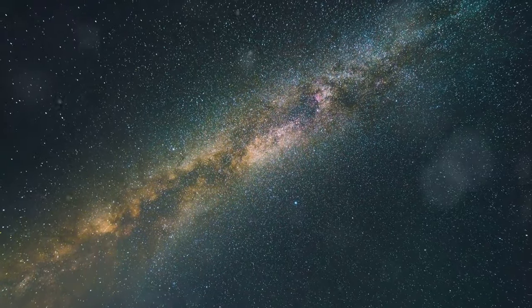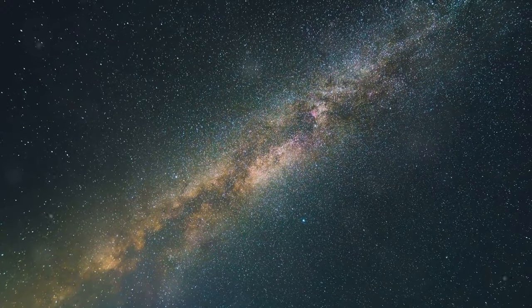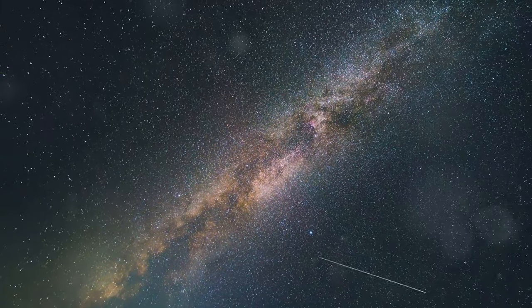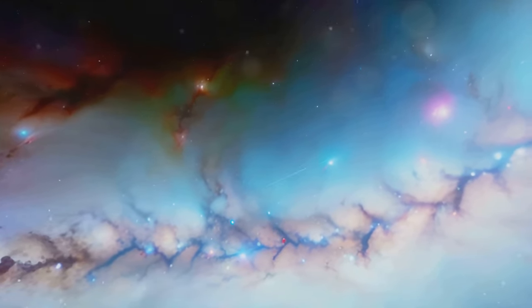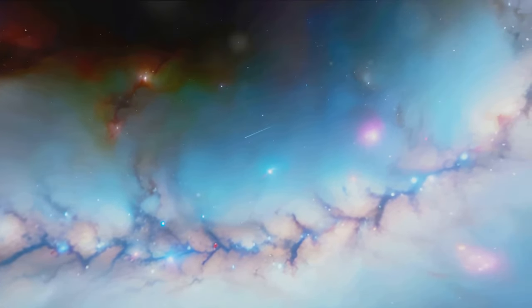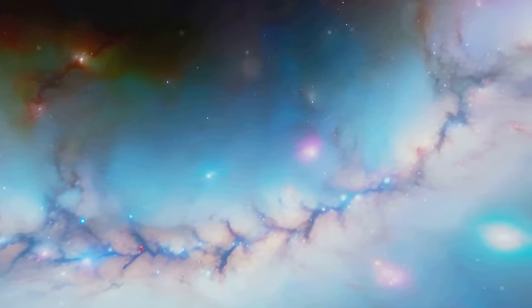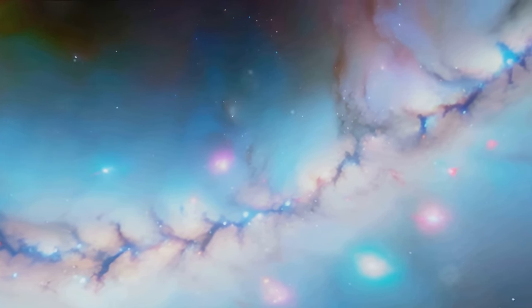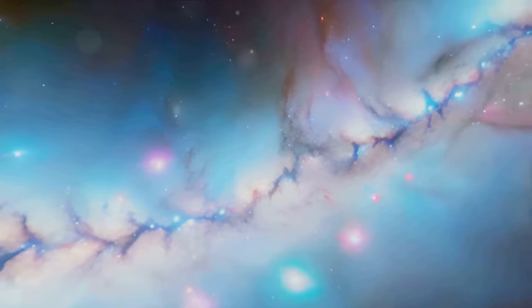Nestled within the constellation Virgo, the Sombrero Galaxy is a cosmic spectacle. It's a spiral galaxy like our very own Milky Way, but with a distinctive feature, a thick dust lane encircling its bright bulbous center, giving it the appearance of a sombrero, hence its name.